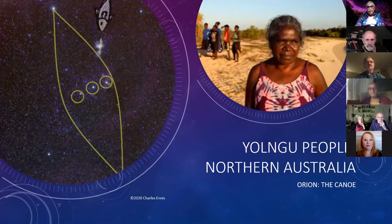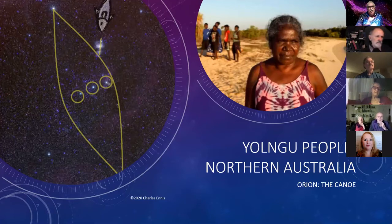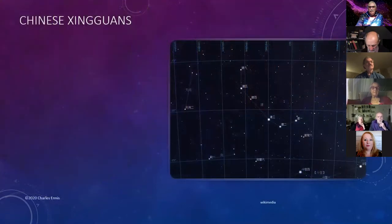The Yolngu people of Northern Australia have their own version of Orion: Orion has become a boat, the three stars in the belt are the seat in the middle of the boat, and the sword is a fish line with a fish on the end of it.